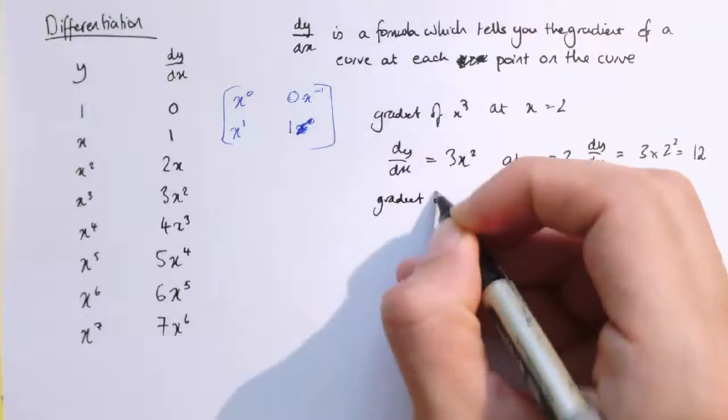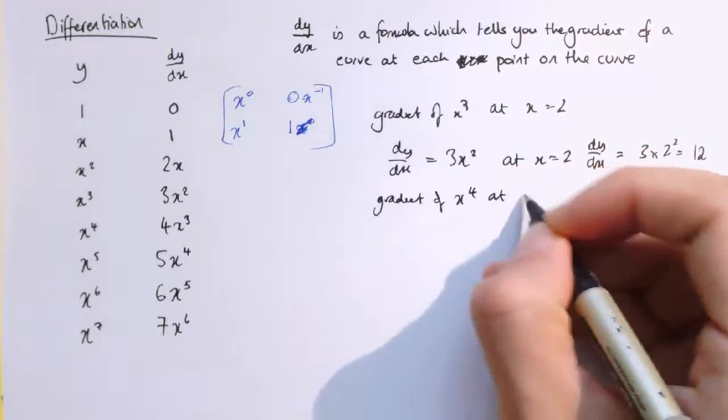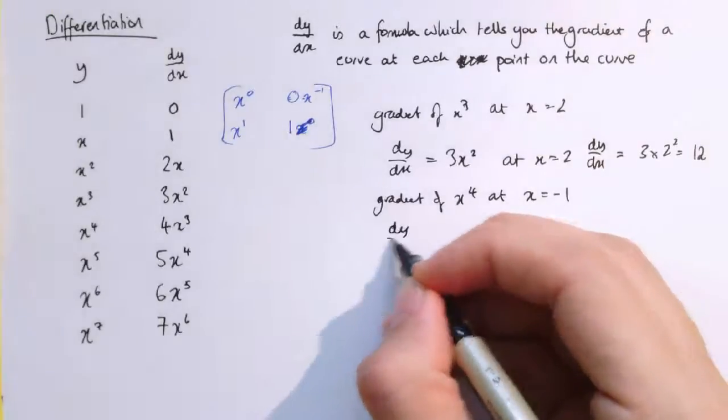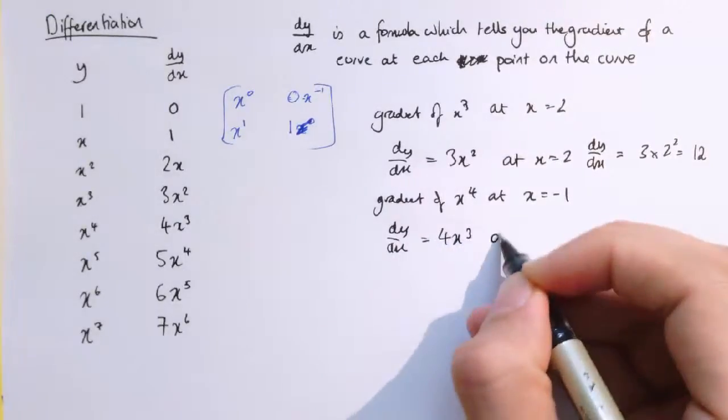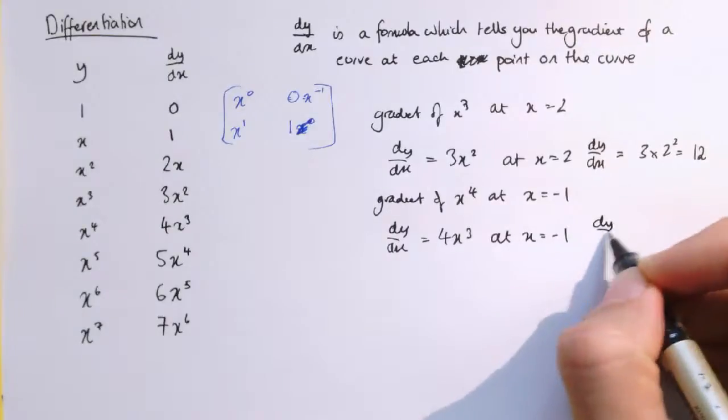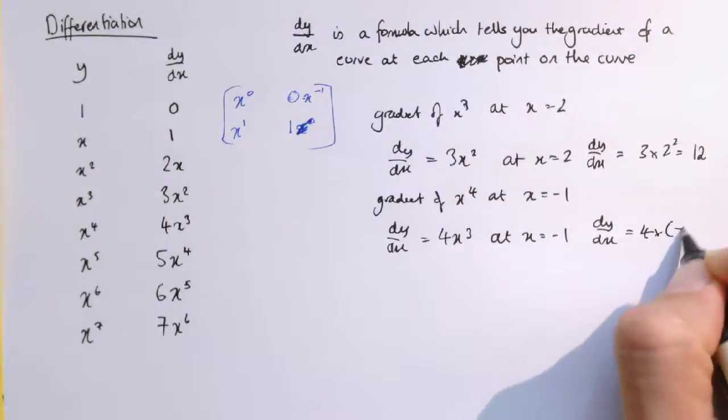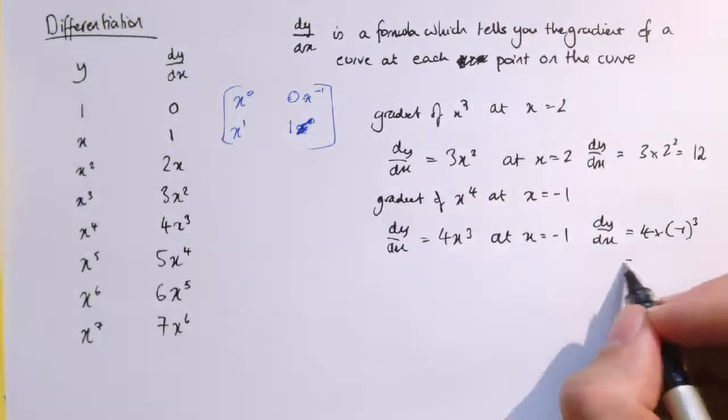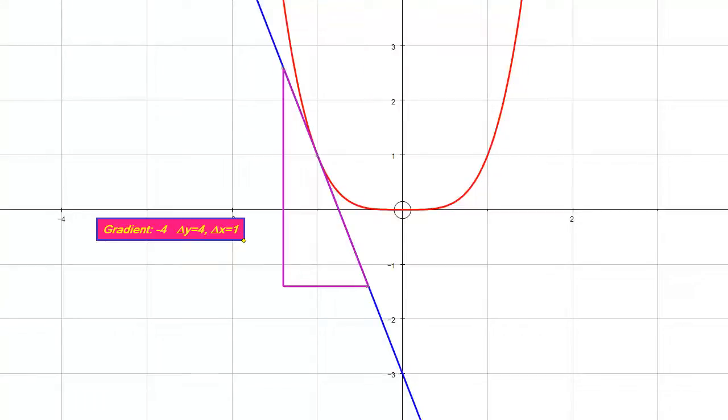So the gradient of x cubed at x equals 2 is 12. If I wanted the gradient of x to the 4 at x equals minus 1, I could say, well, dy/dx equals 4x cubed, and so at x equals minus 1, dy/dx is 4 times minus 1 cubed, substituting that in, and that gives us minus 4. And in fact, if I bring up y equals x to the 4 in the graphing software, that's this red curve here, I've taken the point at x equals minus 1, that will give us this point on the curve here, and the gradient, there's the tangent at that point, and we can see that the gradient of that straight line is minus 4, as we've found by differentiating.